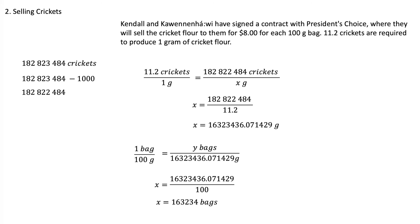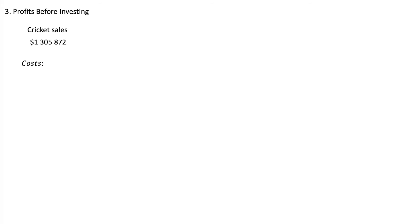That's an awful lot of cricket flour. Each bag we are selling for $8, so we multiply 163,234 bags by $8, giving us $1,305,872 from the sale of cricket flour. Step 3: we want to figure out our profits before investing. Profit is how much money we made minus our costs. From the cricket sales we're going to get $1,305,872, and then we have to remove our costs.